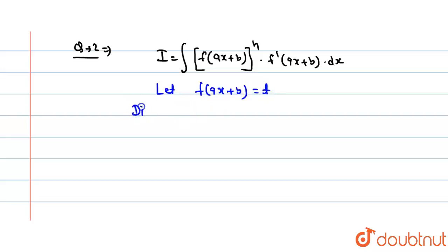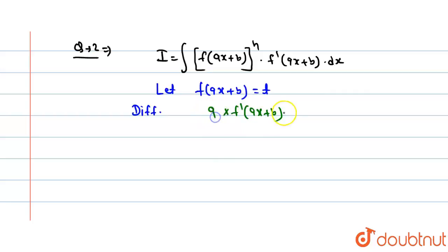Now differentiate this function. So we get: differentiation of f(ax + b) with respect to (ax + b), that is f'(ax + b), times the differentiation of (ax + b) with respect to x, that is a, times dx = dt.